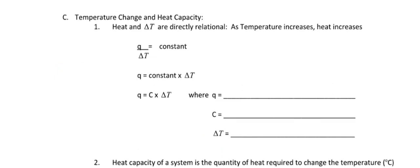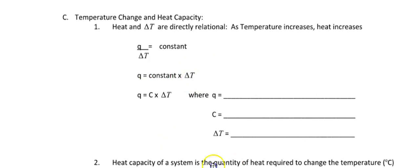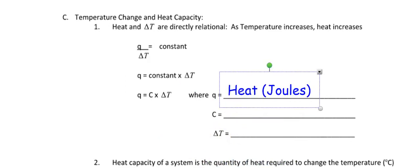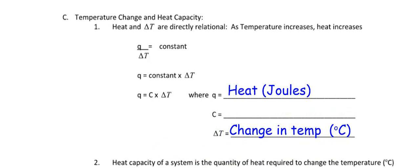In section C we have temperature change and heat capacity. Heat and delta T are directly related — as temperature goes up, heat goes up. So q divided by delta T gives some constant. Rearranging: q equals that constant times delta T. Q is heat, delta T is change in temperature, and that constant is called heat capacity. Its units are joules per degree Celsius.